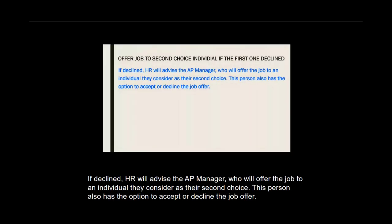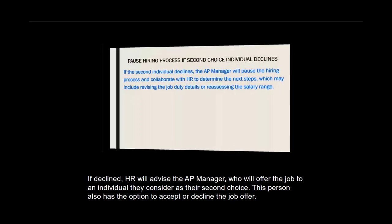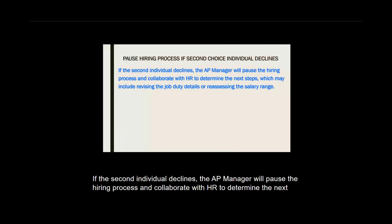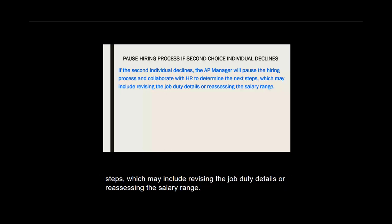If declined, HR will advise the AP manager, who will offer the job to an individual they consider as their second choice. This person also has the option to accept or decline a job offer. If the second individual declines, the AP manager will pause the hiring process and collaborate with HR to determine the next steps, which may include revising the job duty details or reassessing the salary range.